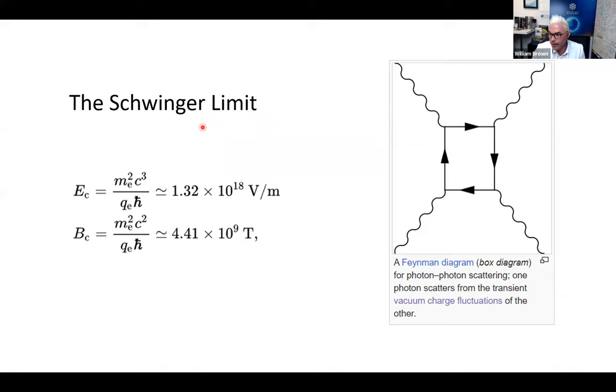The Schwinger limit, the field strength, the electrical field strength needed for this vacuum polarization, as predicted by Julian Schwinger, is actually very large. 10 to the 18 volts per meter, or 10 to the 9 tesla. That's the magnetic field strength needed.